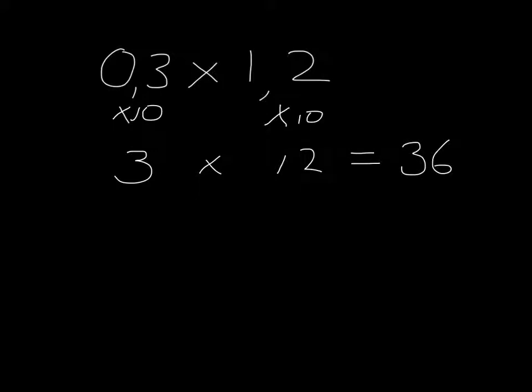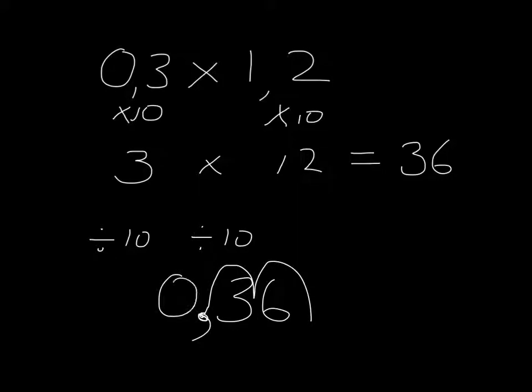But this isn't the answer to the sum that I want because I cheated. I multiplied by 10 and I multiplied by 10. So in order to get me back to the correct answer, I need to divide by 10 and divide by 10. In other words, make up for those two cheats that I made. If I take 36 and I divide by 10 and I divide by 10, my decimal comma goes over there. And the answer to this question is 0,36.